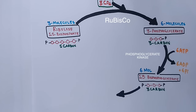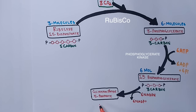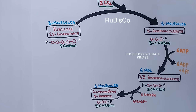Now the reduction phase begins. There is a reduction of 1,3-bisphosphoglycerate into glyceraldehyde-3-phosphate (G3P), mediated by NADPH — the reducing agent in the Calvin cycle. We get six molecules of G3P, each a 3-carbon compound, maintaining 18 carbon atoms total. This reduction reaction is catalyzed by glyceraldehyde-3-phosphate dehydrogenase.